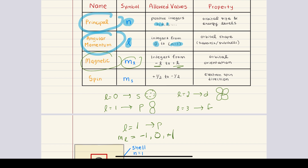This means there are three p orbitals in the p subshell, and they're labeled px, py, and pz, because each of these orbitals is aligned along a different axis in space. The fourth and final quantum number is the spin quantum number, represented by the symbol ms. This number describes the spin direction of the electron, and it has only two possible values: positive one-half or negative one-half. This means that each orbital can hold a maximum of two electrons, one having spin up and the other having spin down.